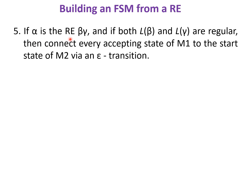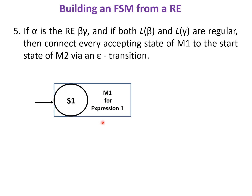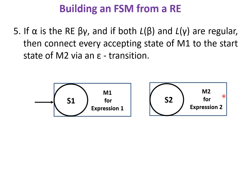If alpha is the regular expression beta concatenated with gamma, and both L(beta) and L(gamma) are regular, then to construct the FSM: given FSM M1 with start state S1 and FSM M2 with start state S2, connect every accepting state of M1 to the start state of M2 via an epsilon transition.